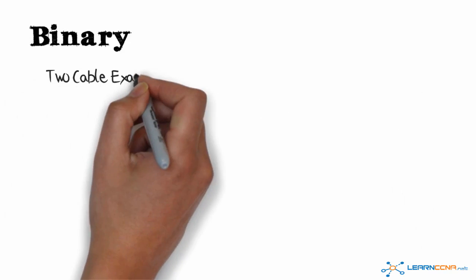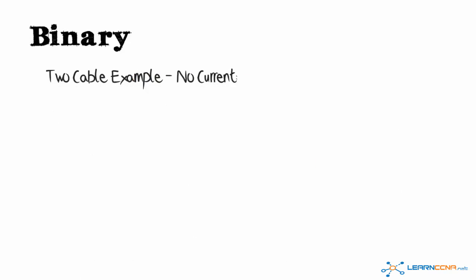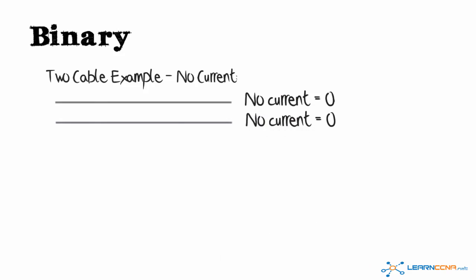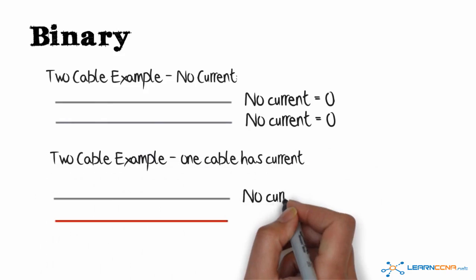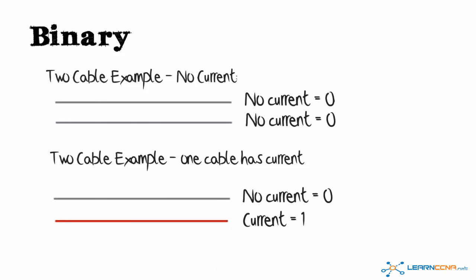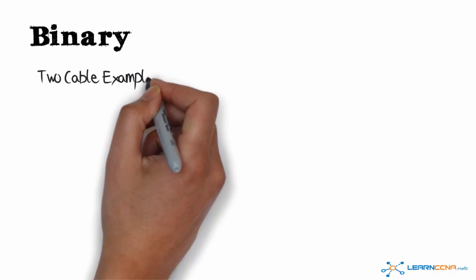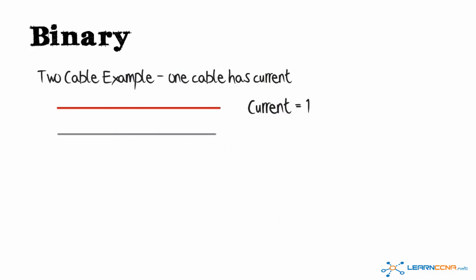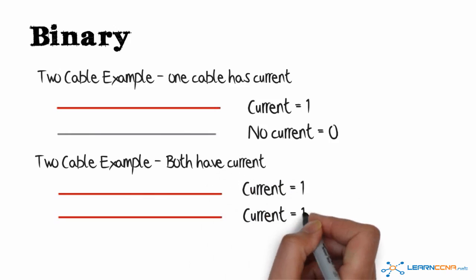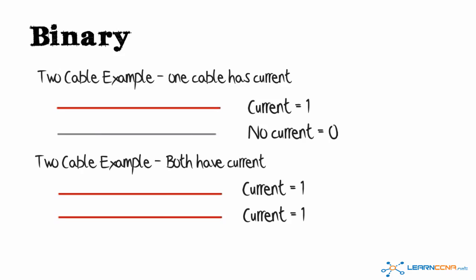Continuing with the analogy, imagine that you have two cables. Two cables can either have no current applied — no current equates to zero — or you could have no current on the first cable but have current on the second cable, and that equates to zero, one. No current equals zero, current equals one. We could have current on the first cable and no current on the second cable, giving us one, zero. Or we could have current on both cables, giving us a value of one, one.